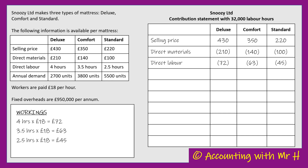In this question there are no other direct costs - always look out, sometimes it might say other direct costs or other variable costs. Anything that is direct or variable needs to be included here. Then I'm going to subtract the direct materials and the direct labour from the selling price, which will give me the contribution per unit.